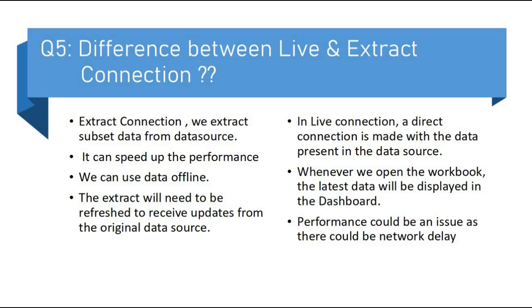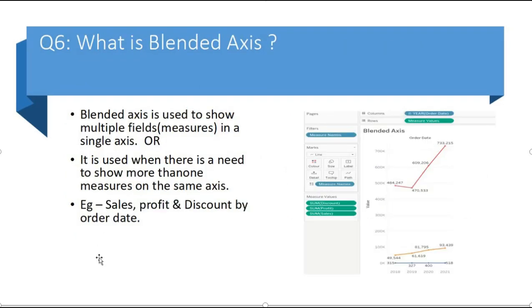The next question is what is blended axis. Blended axis is used to show multiple fields or measures in a single axis, or we can say it is used when there is a need to show more than one measure on the same axis. Let me show you one example. I have taken this example and here we are showing sales, profit and discount by order date. As we can see here discount, profit and sales in the same axis.